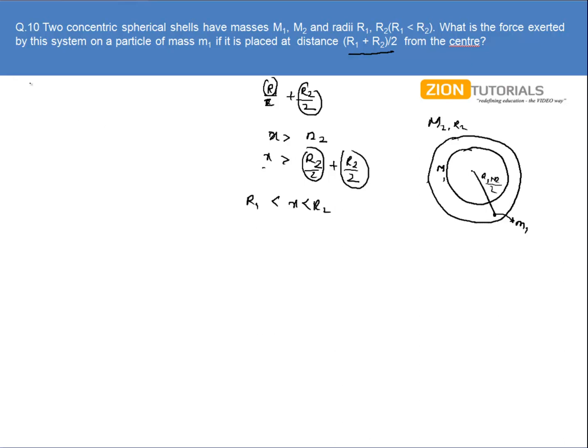Now what I have to calculate is the total force. One thing is clear: if a particle of whatever mass is kept inside a hollow sphere, then the gravitational force between both of them will be zero. So the gravitational force will be only due to the inner sphere and the particle of mass m.